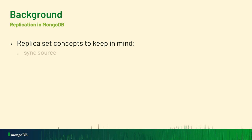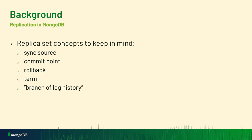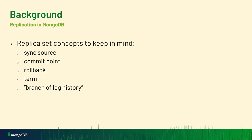Some key concepts to keep in mind: the sync source is where a node is currently fetching log entries from. The commit point is the high watermark of the durable point in the log. Rollback is when a node has to undo a divergent log entry. And the notion of a branch of log history — if you're on the same branch of history, one log is a prefix of another log when you look at logs identified by the terms in their entries.